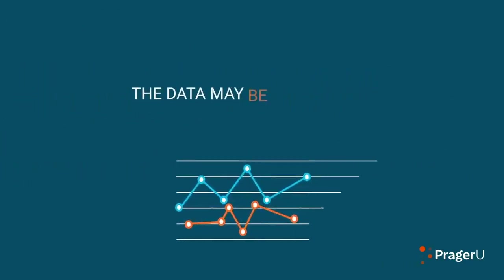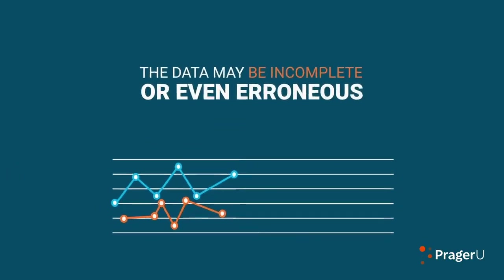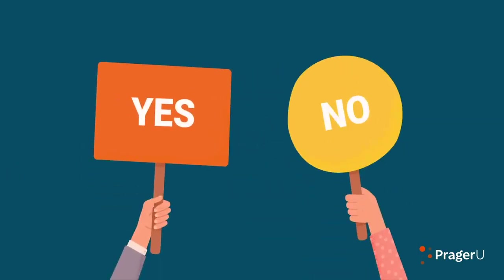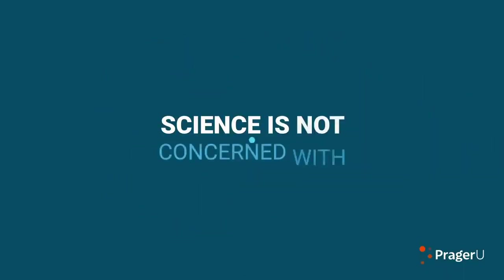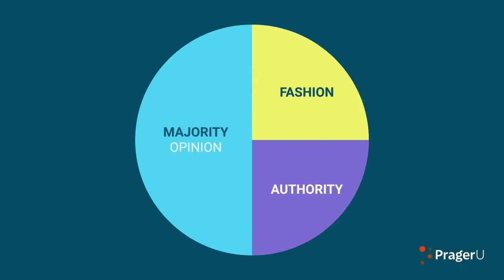Second, the data may be incomplete or even erroneous. It's human nature to want definitive answers, but science can't always offer those. Furthermore, science is not concerned with fashion, authority, or majority opinion.